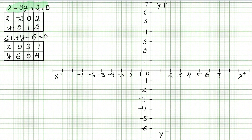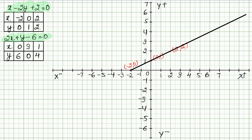Now plotting the first equation. We said y is 0 and x is minus 2 — so we mark this point here. Next point: x is 0, then y is 1 — we mark this point here. Next point: x is 2, y is 2 — we mark this point here. Now we draw the line through these points and label it x minus 2y plus 2 equals to 0.